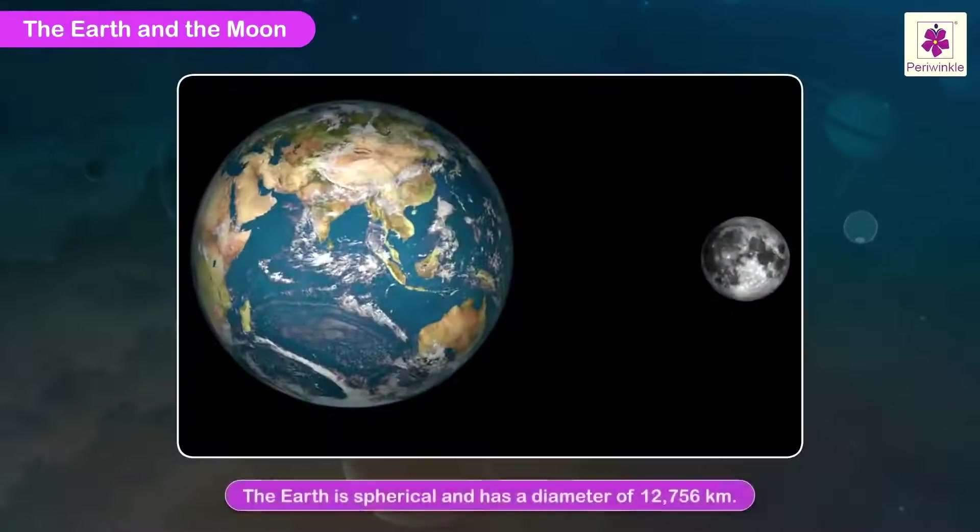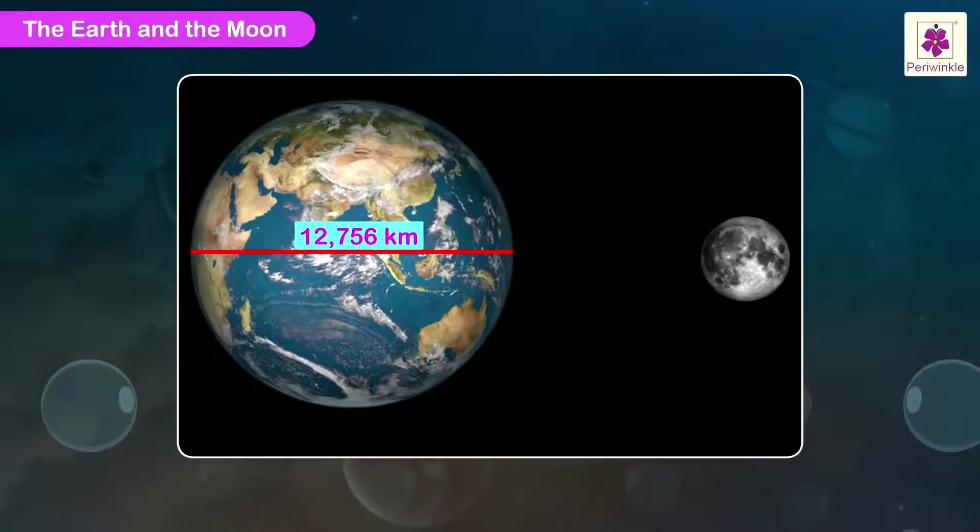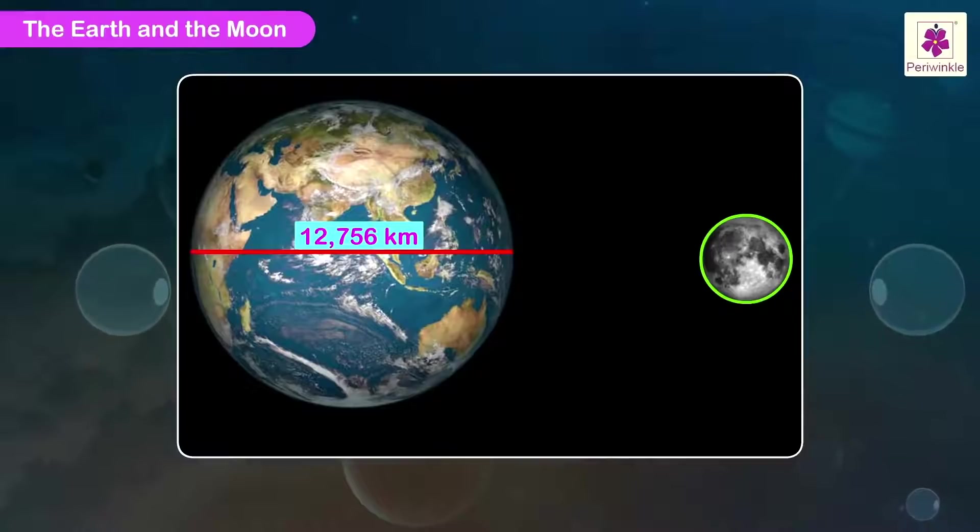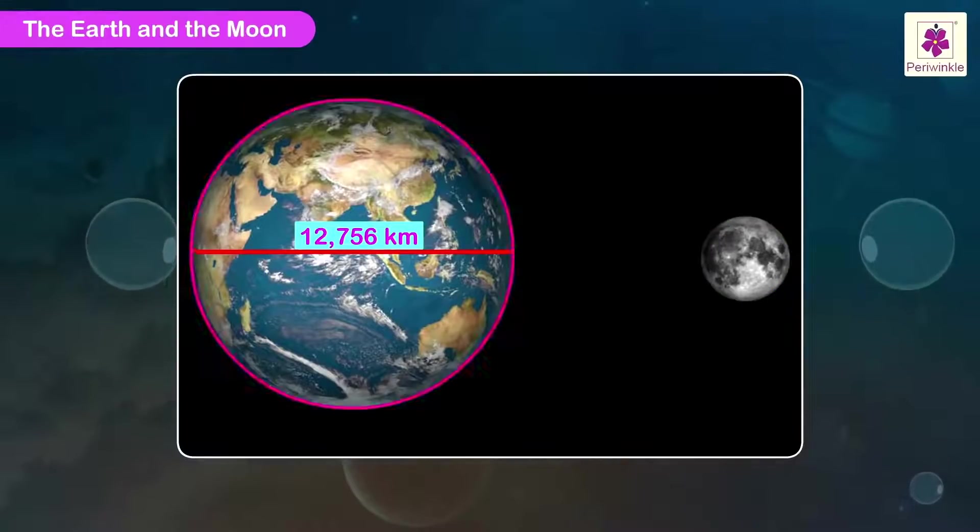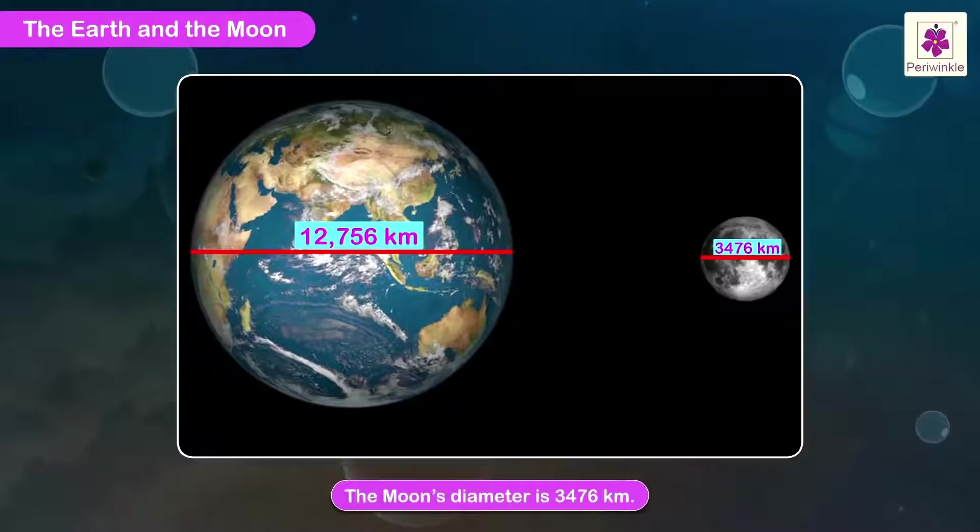The Earth is spherical and has a diameter of 12,756 kilometers. Like the Earth, the Moon is also a sphere, a much smaller one than the Earth. The Moon's diameter of 3,476 kilometers is roughly a little more than one-fourth of the Earth's diameter.